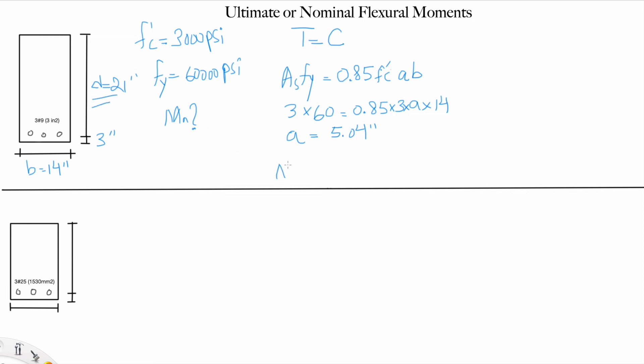What is left? Nothing. We'll just say Mn is T multiplied by d minus a over 2. What's T? As times fy, which is 180, multiplied by d which is 21 minus 5.04 over 2. This gives me 3326.4 inch-kips, or if you want to put it in different units, 277.2 kip-feet.